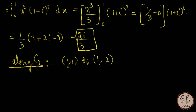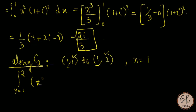Here the x-coordinate is constant and equal to 1, so we take y going from 1 to 2. The integrand x² + iy² becomes 1² + iy² = 1 + iy². Also z = x + iy = 1 + iy.